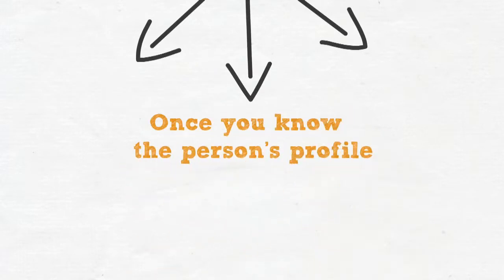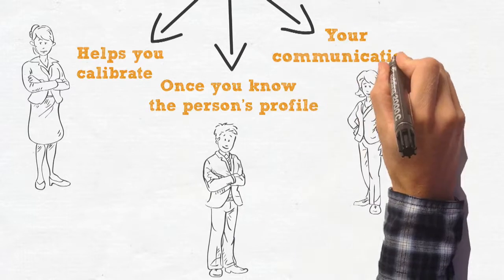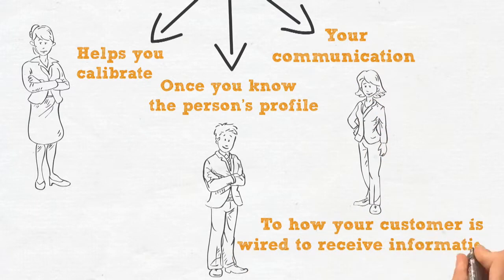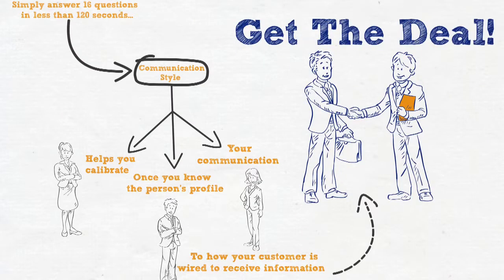Once you know the person's profile, I Get You Pro helps you calibrate your communication to how your customer is wired to receive information, resulting in you being better prepared to handle negotiations, objections and opportunities.